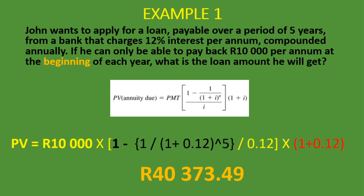Let's move on to our second example. John wants to make an investment that will pay him 2,000 rand at the beginning of every month for the next three years. If the investment offers an interest rate of 12% per annum, compounded monthly, how much should he invest today? We know it's the present value because we're asked how much to invest today, and it's an annuity due because it occurs at the beginning of every month — 'beginning' is the keyword.